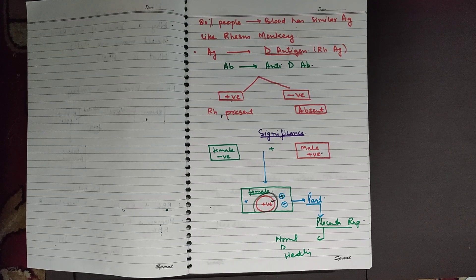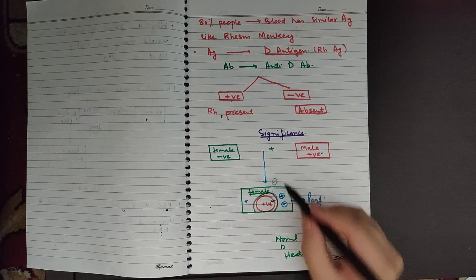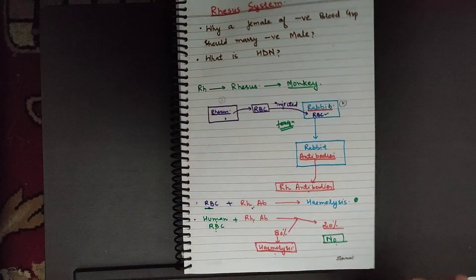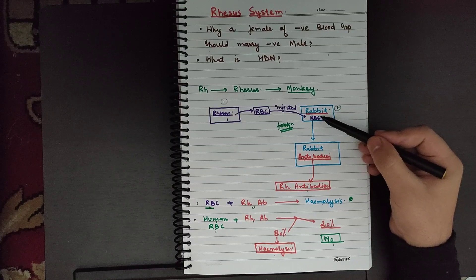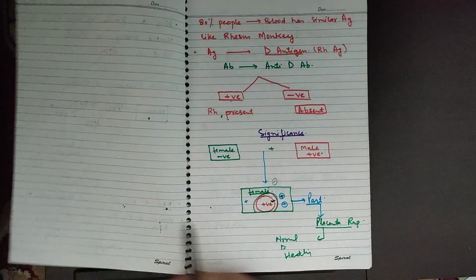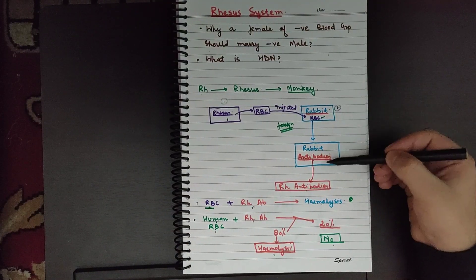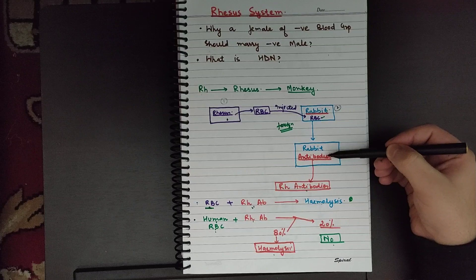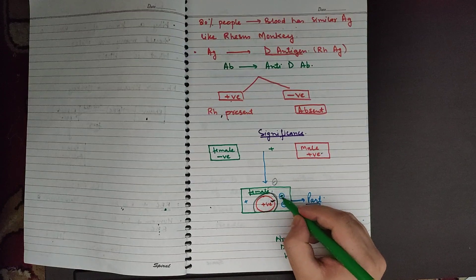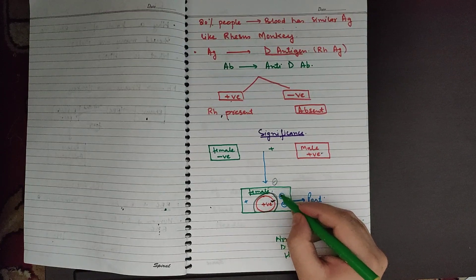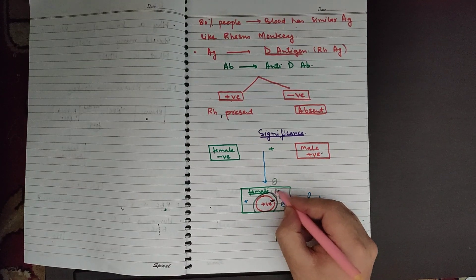When these positive RH cells enter the RH negative female — this is the same as the case of the rabbit — the mother will produce antibodies against these positive RBCs. These antibodies will be present in the blood of the mother. The female will recognize the RH positive RBCs as foreign and will produce antibodies against them.